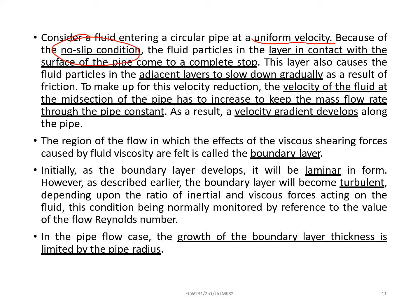This layer also causes the fluid particles in the adjacent layer to slow down gradually. This is because of the friction, friction of waves with the cliff. To make up for this velocity reduction, the velocity of the fluid at the mid-section of the pipe has to increase to keep the mass flow rate through the pipe constant.